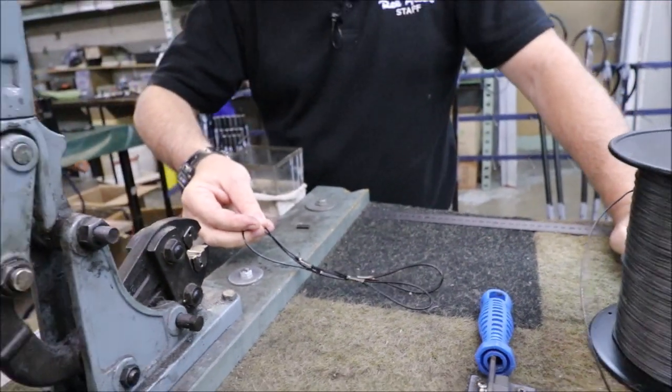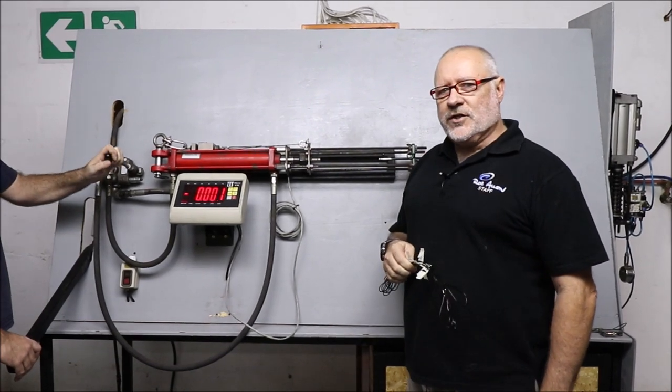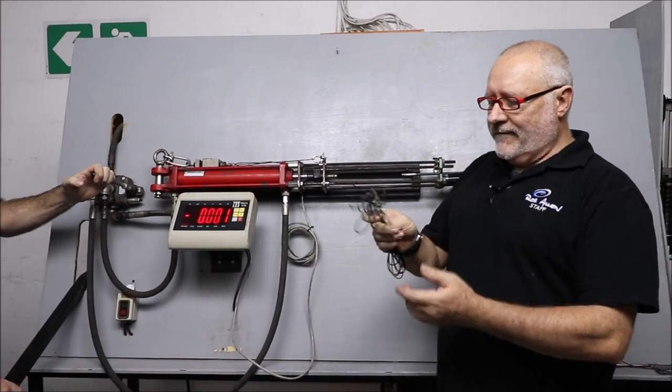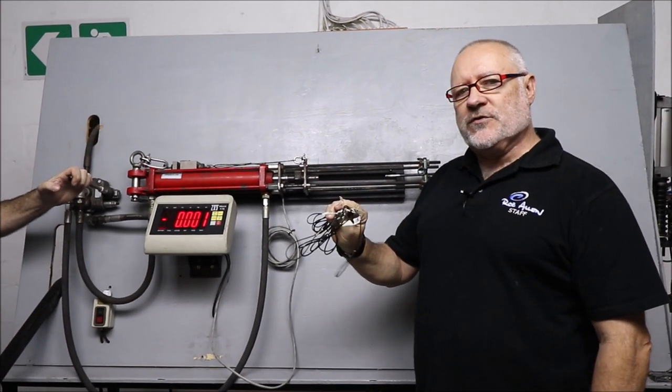Let's go to the test station now. We're now at our test station. We've crimped two on every machine in the factory and everyone's labeled so we know exactly which comes from where.